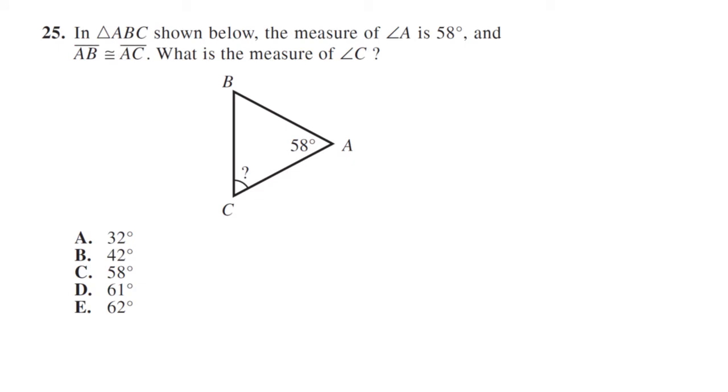In the triangle shown below, measure A is 58 degrees. AB is congruent to AC, so we have an isosceles triangle. We want to know what is the measure of angle C. So we have 180 degrees in a triangle minus 58 degrees will tell us how many degrees we have left in angle B and C.